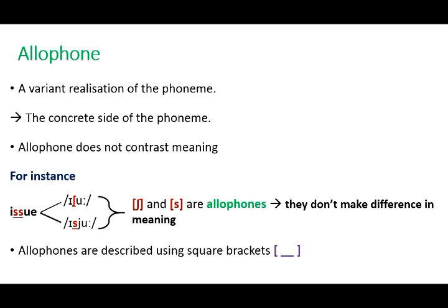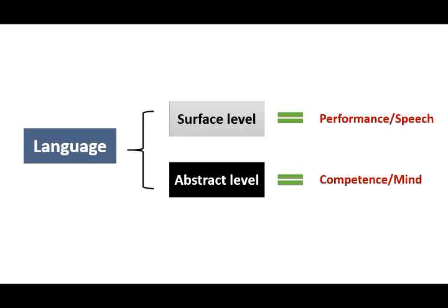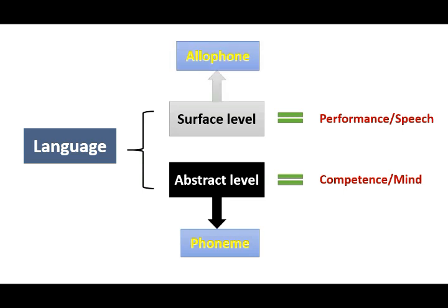There might still be some confusion between what is a phoneme and what is an allophone, so let's see how they differ. Language is composed of two levels: the abstract level, located in the mind — what we call competence — and the surface level, located in speech — what we call performance. When we speak of a sound that is still at the abstract level, we use the term phoneme. When we speak of a sound at the level of speech, we use the term allophone. In other words, when describing sounds as part of our competence we use phoneme, and once these sounds become part of our performance we use allophone.